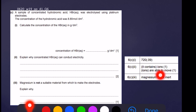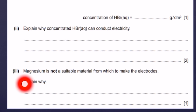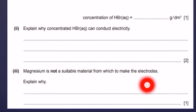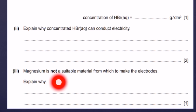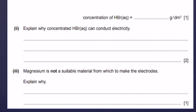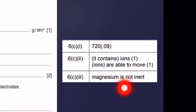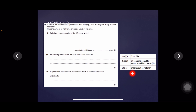Question 3: magnesium is not a suitable material for making electrodes — explain why. Magnesium is a reactive metal, so the answer is: magnesium is not inert, therefore it cannot be used as an electrode. Usually graphite or platinum electrodes are used because they are inert.